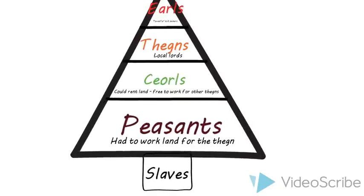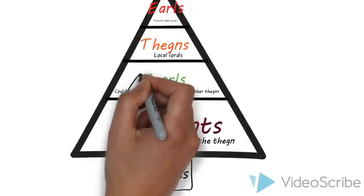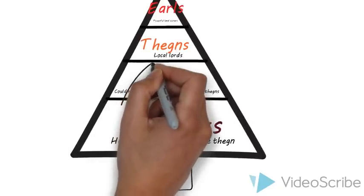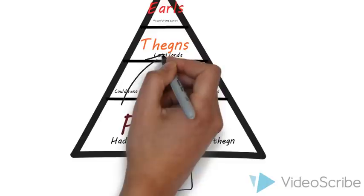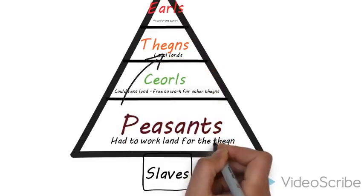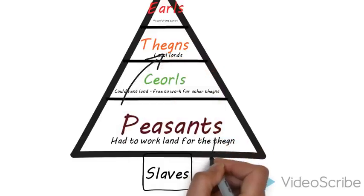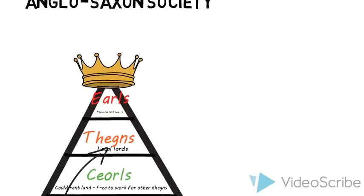In Saxon society, you could move up and down the levels of society. For example, if you were a peasant and you worked hard, you might become a churl. And then if you owned enough land, became rich enough, and began to pay taxes, you might become a thane one day. Whereas if you were a peasant and didn't have enough food, you could sell members of your family into slavery for money so that the rest of your family could survive.